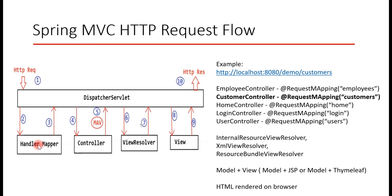The HandlerMapper identifies which controller is responsible for processing the particular request. For example, for a URL like '/customers', it maps to the CustomerController by looking for the method annotated with @RequestMapping that matches that URL. Once the HandlerMapper maps the request to the appropriate controller, it returns the controller details back to the DispatcherServlet. Now the DispatcherServlet knows which controller is responsible, so it sends the request to that controller — that is the third step.